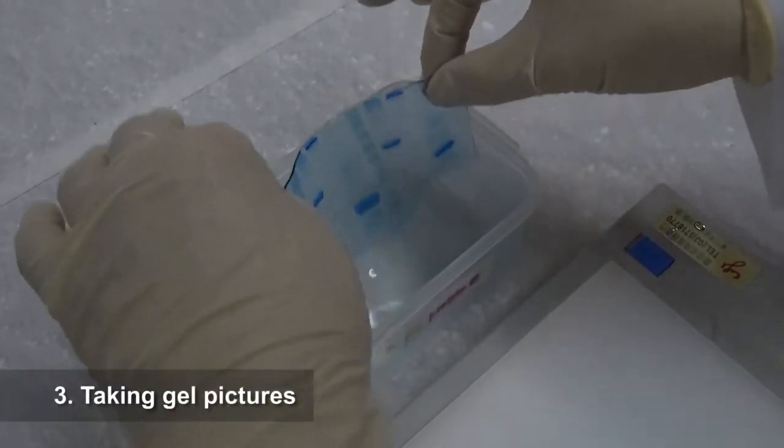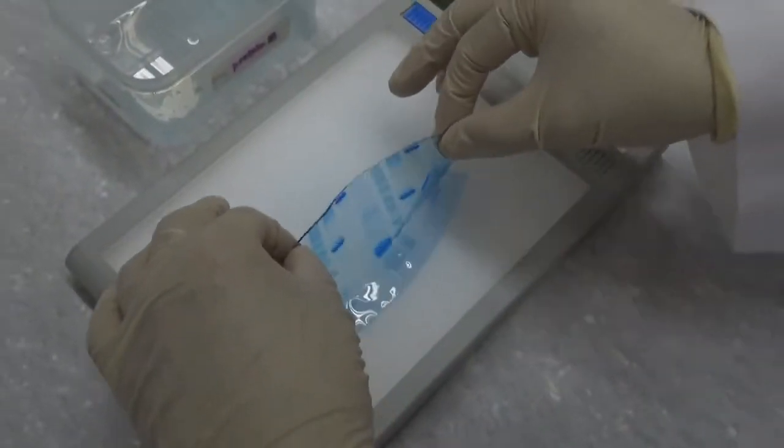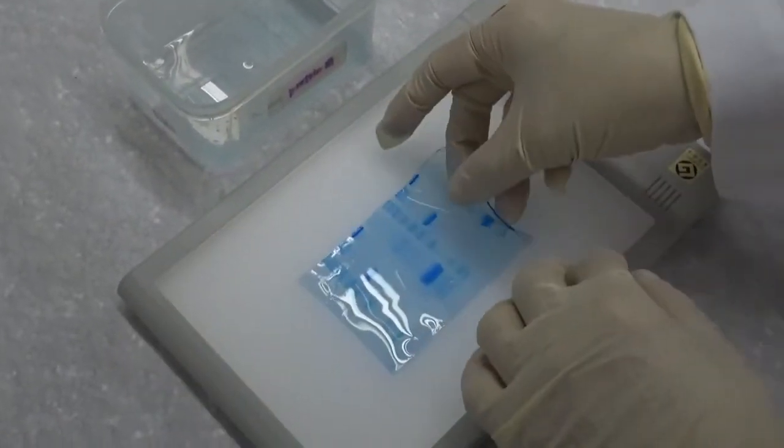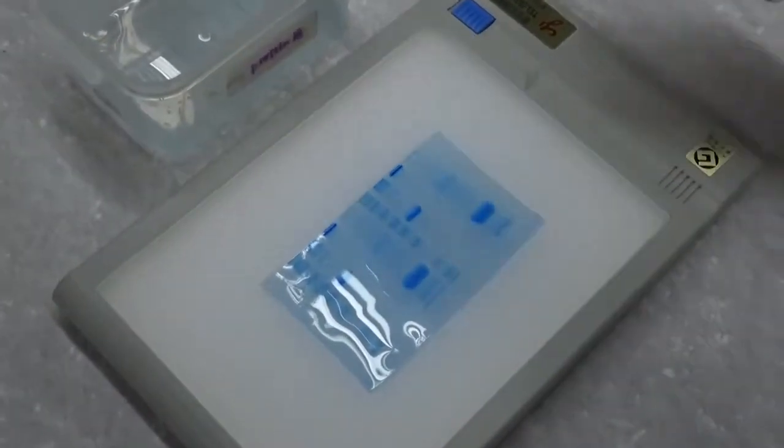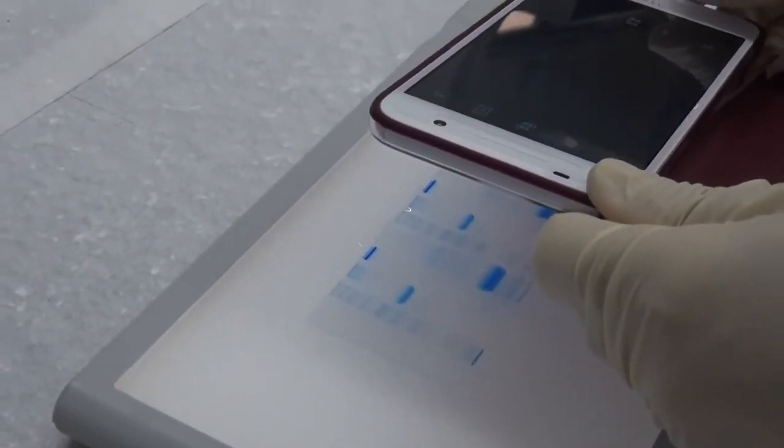3. Taking gel pictures. Pour away the water after washing. Pull the gel by hand to allow excess water to drip away and spread the gel on a light box. Turn on the light. Take gel pictures using a cell phone or camera.